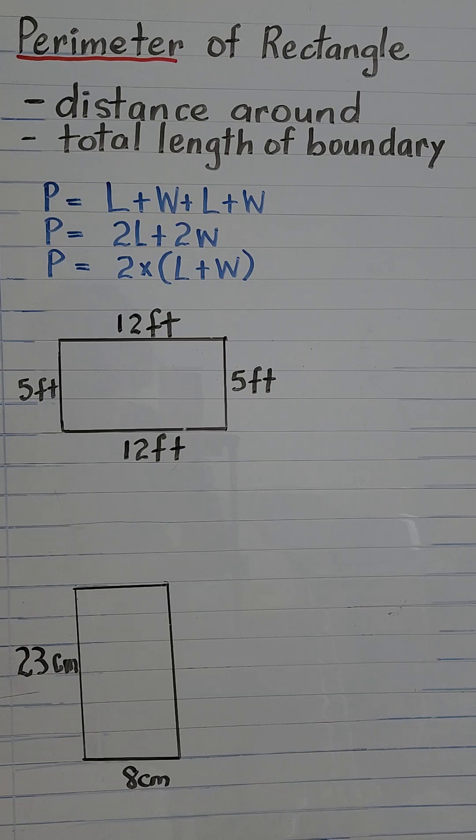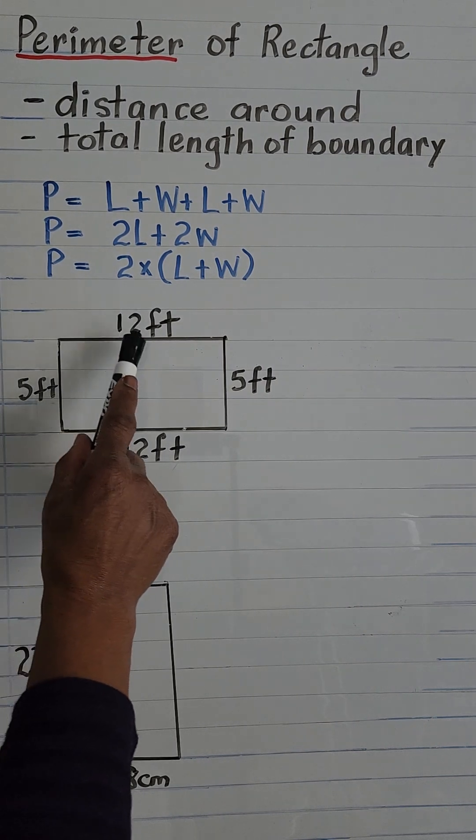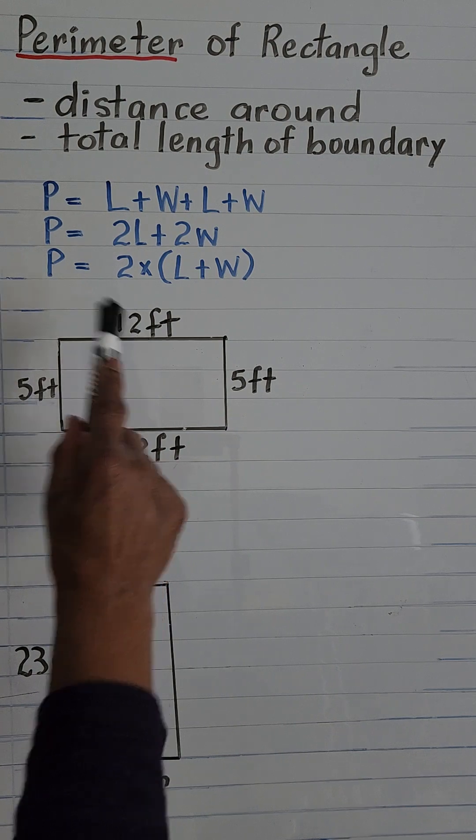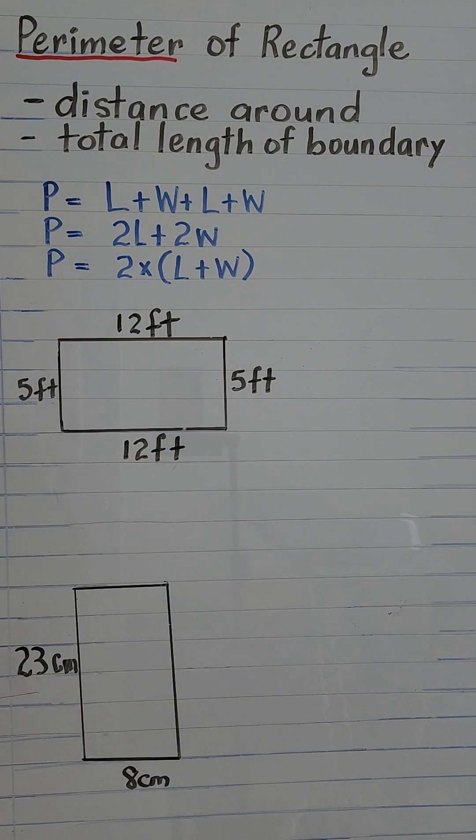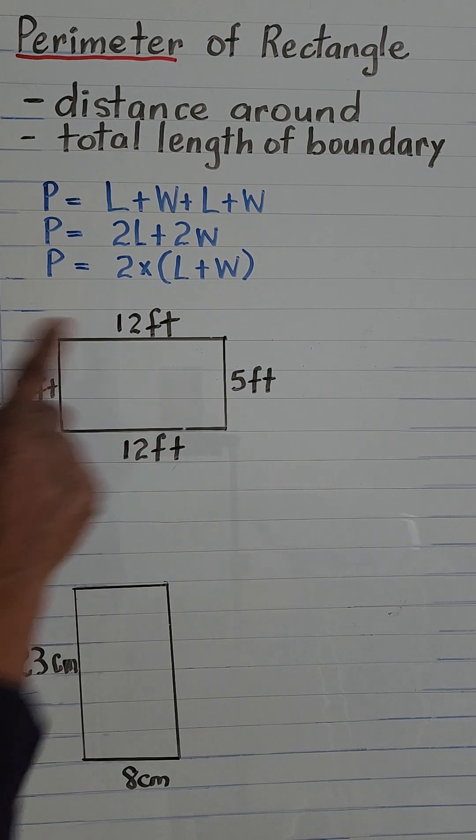Unless you're told otherwise, we usually take the longest side to be the length. So in this rectangle we will take the 12 feet as the length and the 5 feet as the width. Let's go ahead and find the perimeter of this first rectangle.